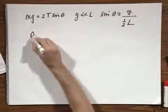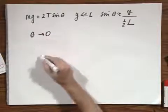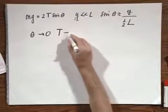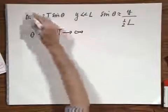So if theta becomes zero, notice that the tension goes to infinity, because this is a given.